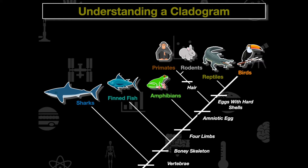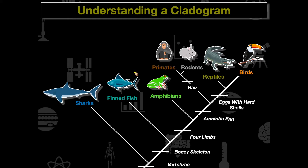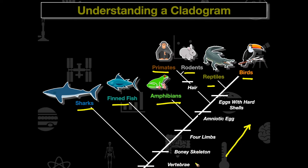As we move up the cladogram, we have vertebrae, bony skeleton, four limbs, amniotic egg, eggs with hard shells, and hair. We're going to look at the nodes to understand how these organisms are related. The rise of vertebrae occurs early on the cladogram, so sharks, finned fish, amphibians, primates, rodents, reptiles, and birds all have vertebrae — every organism as you move up has them.